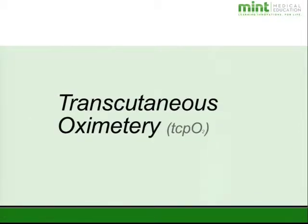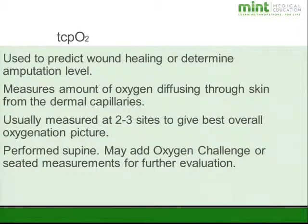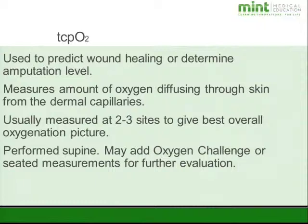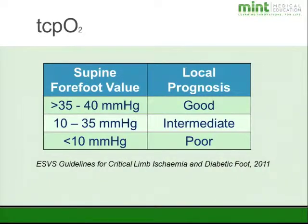Another way to evaluate digital flow is with transcutaneous oximetry. TCPO2 is used to predict wound healing or determine amputation level by measuring the amount of oxygen diffusing through the skin from the dermal capillaries. Measurements are usually taken at two to three sites, with the patient lying flat. A pressure over 35 mmHg will likely heal well; between 10 to 35 may or may not do well; and less than 10 has a poor prognosis.